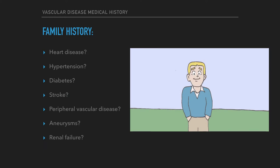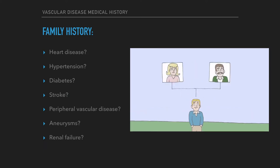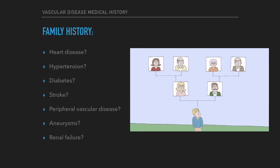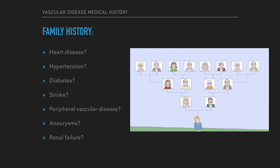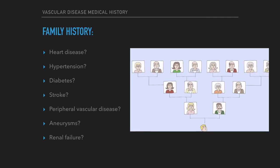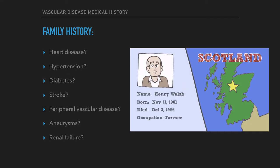Family history: do they have a family history of specific conditions? Including heart disease, hypertension, diabetes, stroke, peripheral vascular disease, aneurysms, or renal failure.